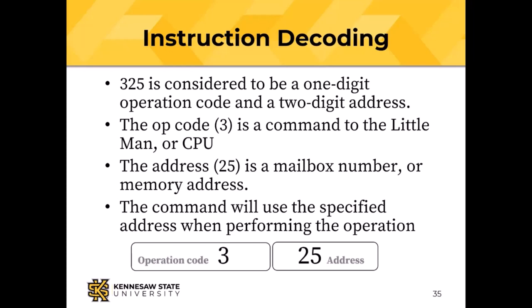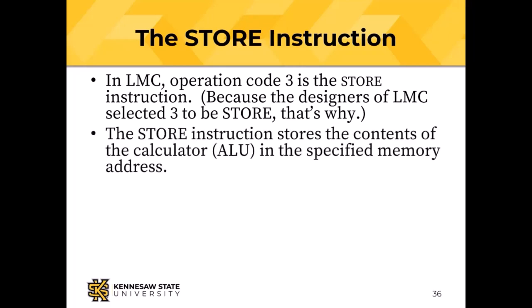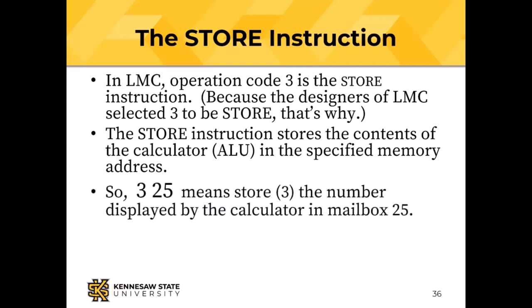So we're looking at that 325 this way: one digit of operation code and two digits of address. Opcode 3 is the store instruction — Stuart Madnick decided that in 1965. One is add, two is subtract, three is store. The store instruction stores the contents of the calculator to the specified memory address. So 325 means: store the number displayed by the calculator in mailbox 25.